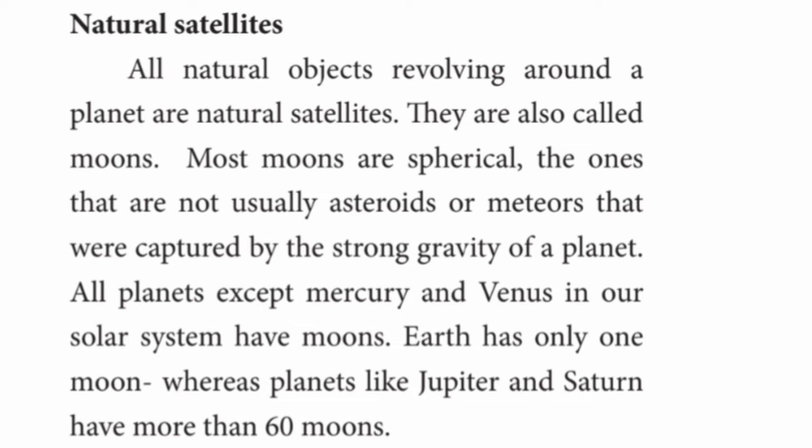All natural objects revolving around a planet are natural satellites. Natural satellites are called moons. Most moons are spherical. The ones that are not usually asteroids or meteoroids that were captured by the strong gravity of a planet. All planets except Mercury and Venus in our solar system have moons. Earth has only one moon, whereas planets like Jupiter and Saturn have more than 60 moons.